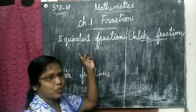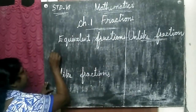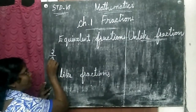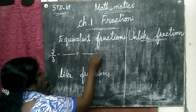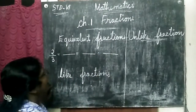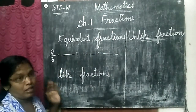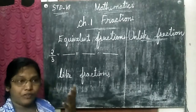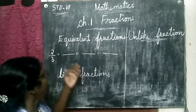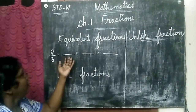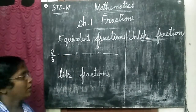Next I am going to teach you equivalent fraction. Suppose I am having a fraction here: two by three. Let us find three equivalent fractions of two by three. They may ask you to find five or seven or two or one. But here we are going to find three equivalent fractions of two by three.